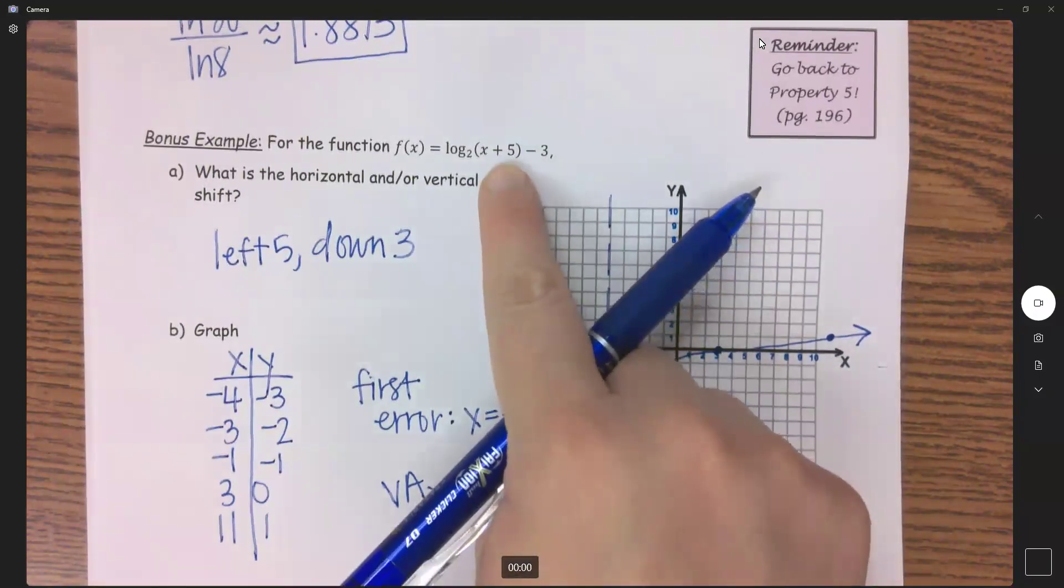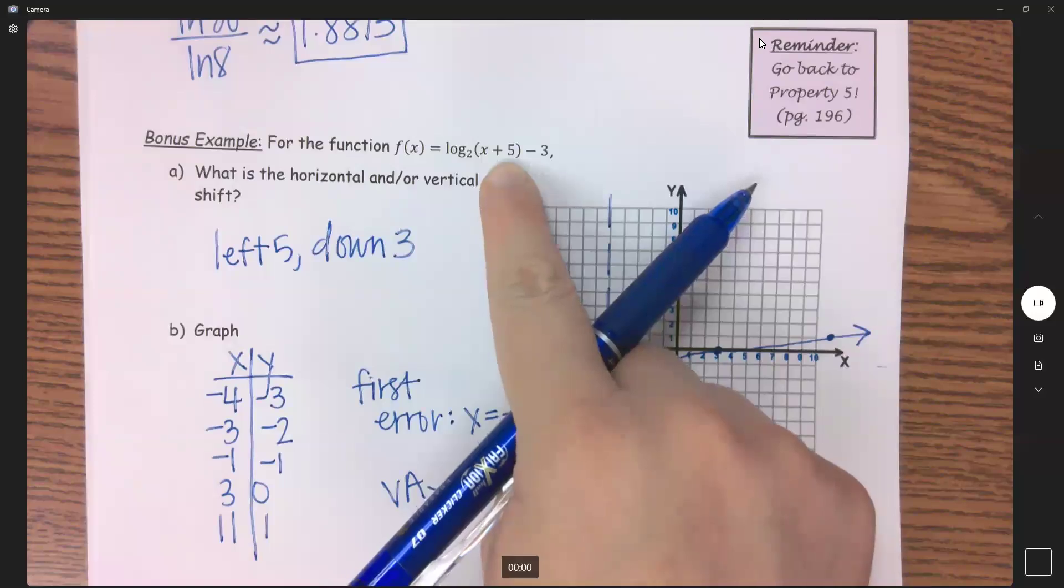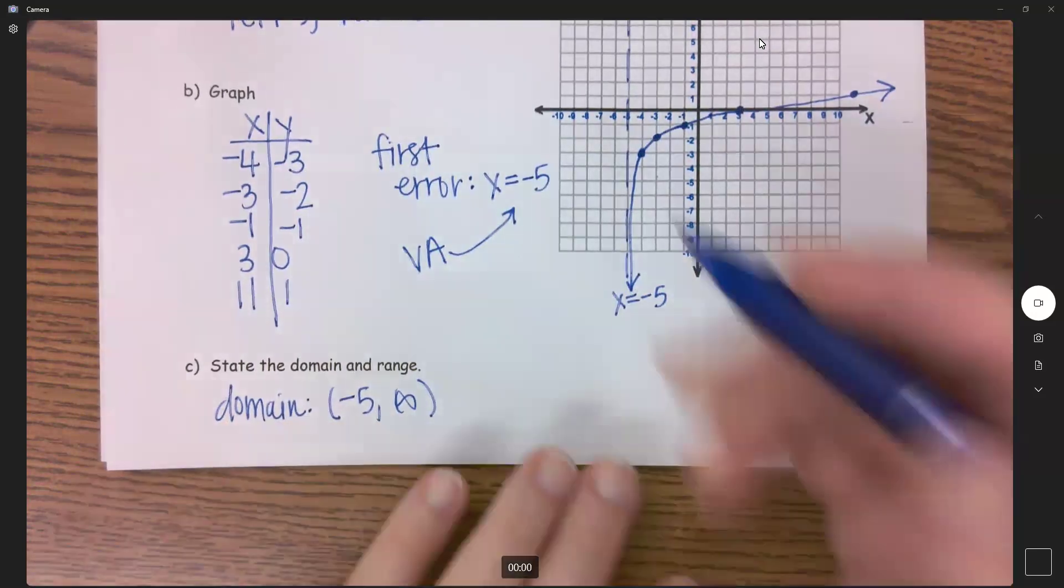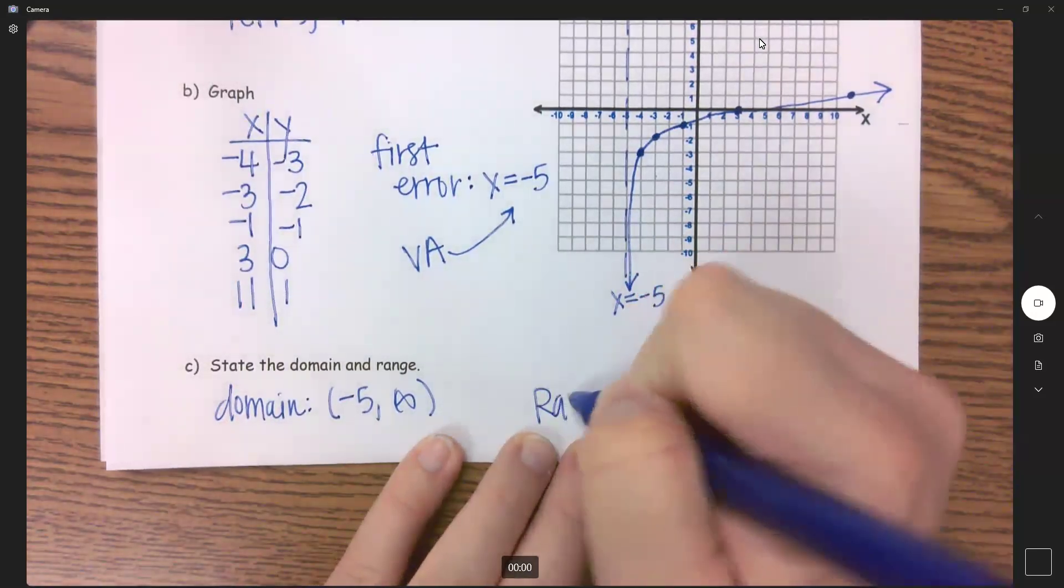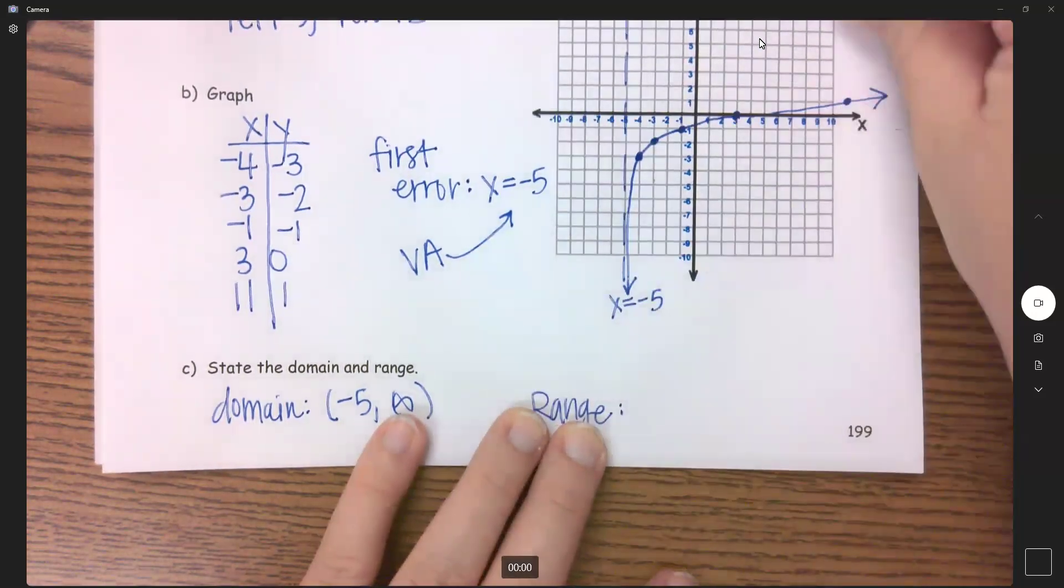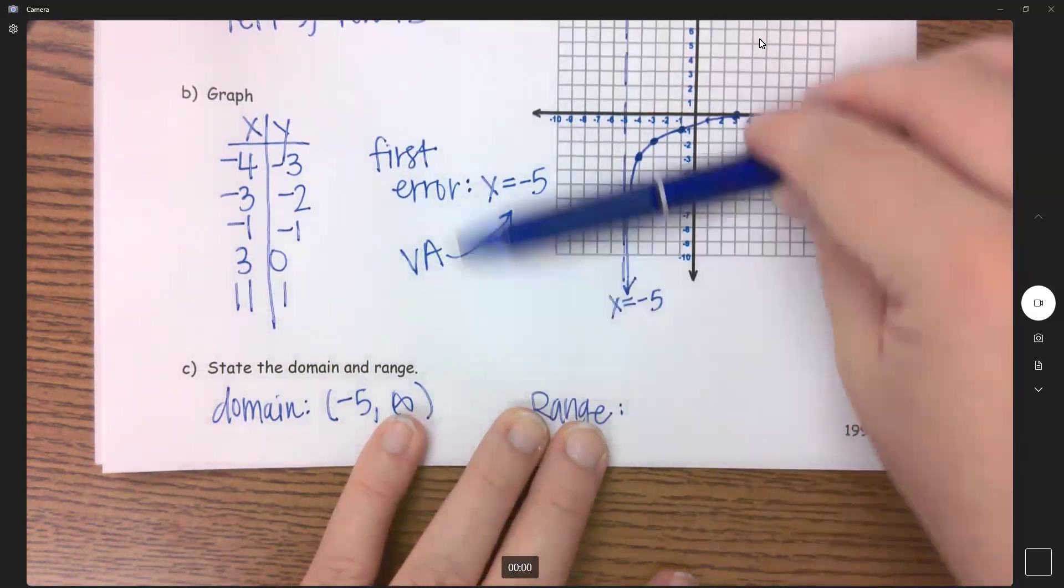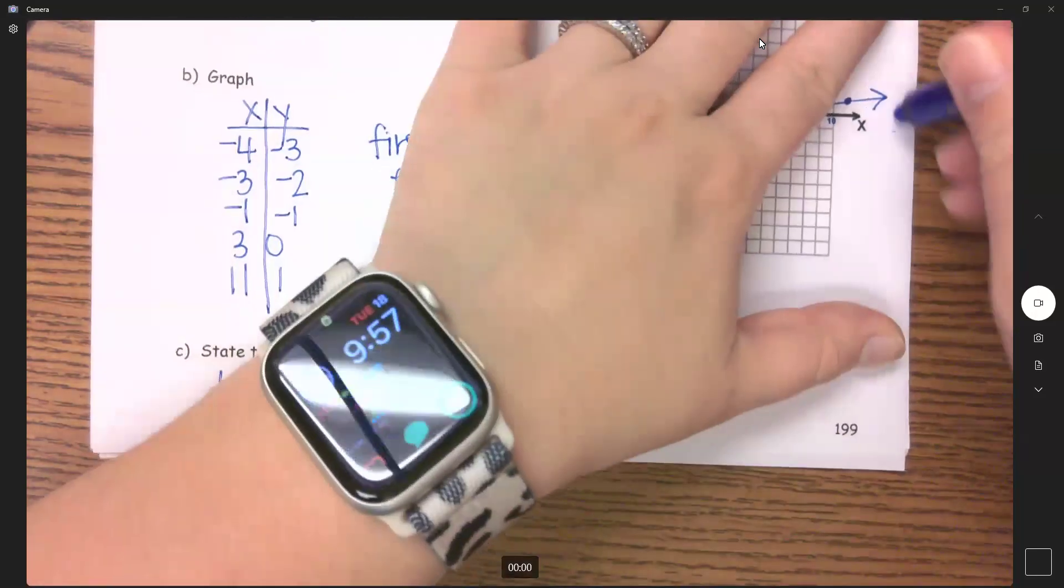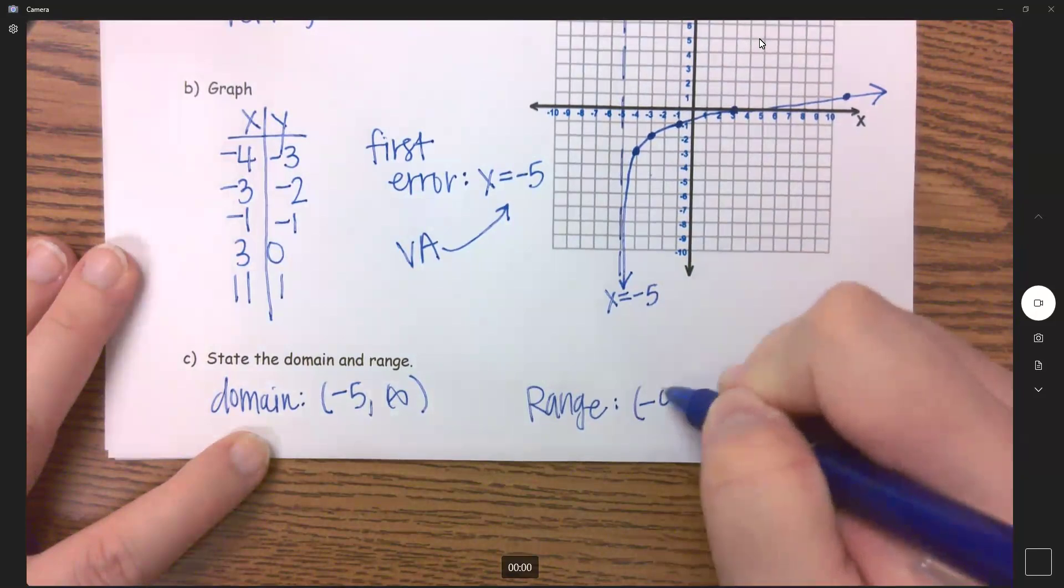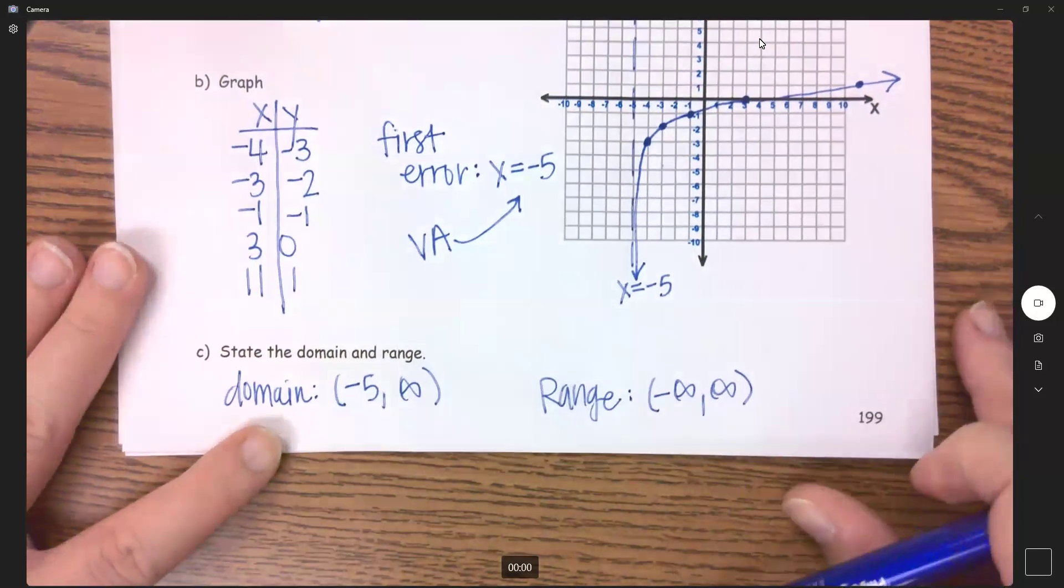And you can also take what's in parentheses here, x plus five, and set it to be greater than zero. When you subtract that over, you get x must be greater than negative five, which is what we get right here. And then my range, as I go from the bottom to the top, we go arrow to arrow. Your range for all logs is always going to be negative infinity to infinity.